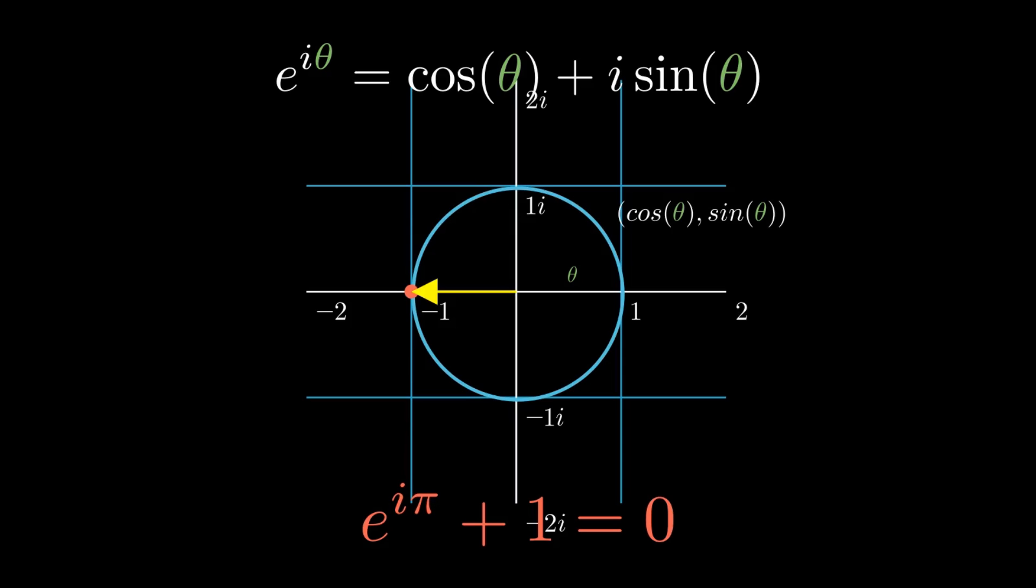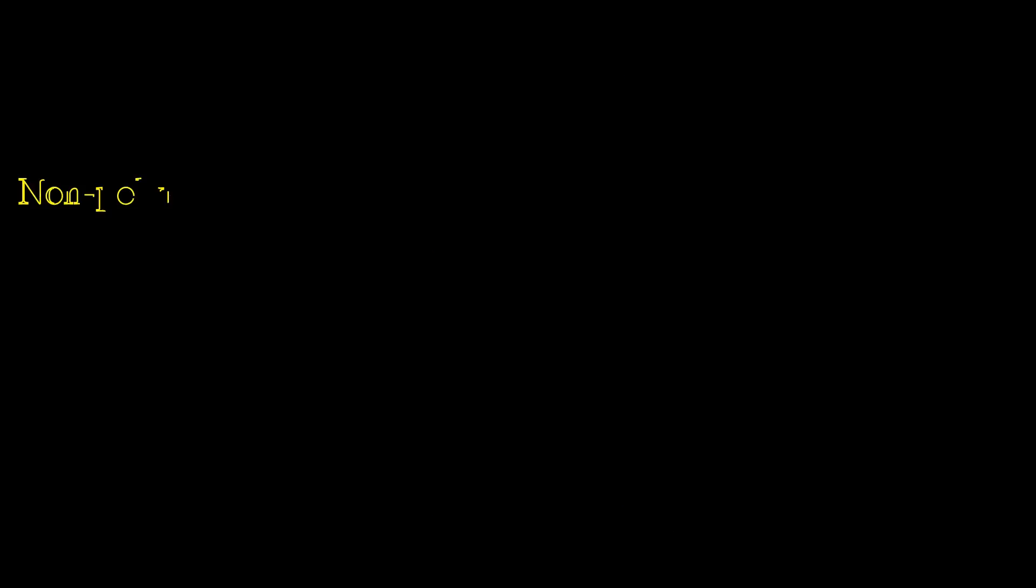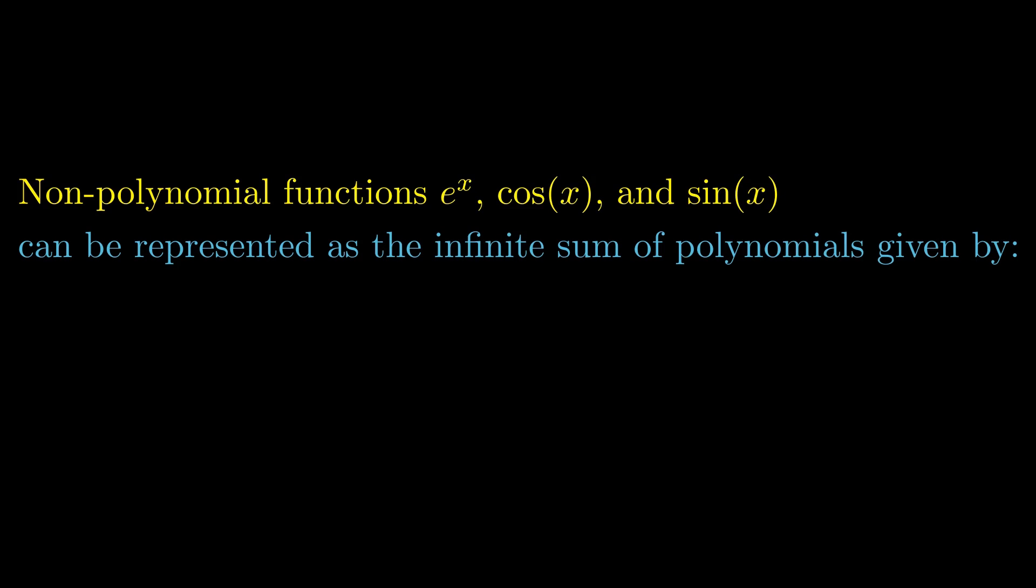Now, you might be wondering how do we actually prove Euler's mind-bending formula. If you recall from our previous discussion on Taylor series, non-polynomial functions like e to the x, cos x and sin x can be expressed as infinite polynomial sums. For example, the expansion for e to the x looks like this.